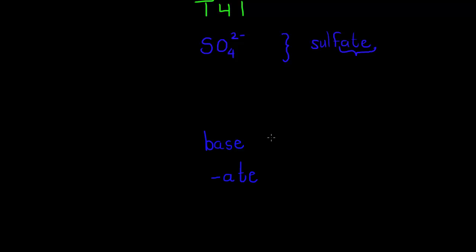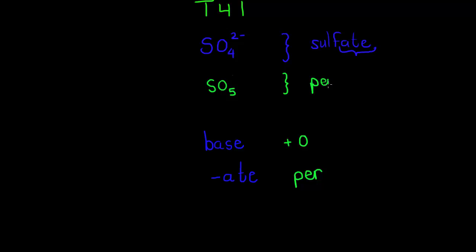If I were to add one oxygen to the base, then all I would do is add the prefix "per". So for example, SO4 becomes SO5 — I've added an oxygen — and this one will be called persulfate. That's easy enough. I'll get to the charge in a minute; it's even easier.